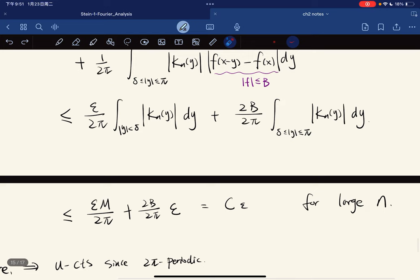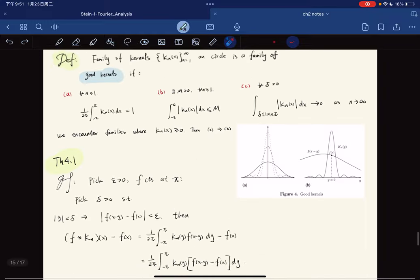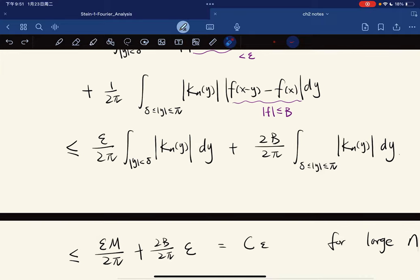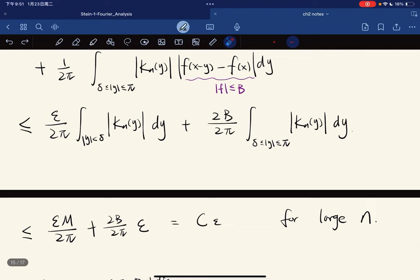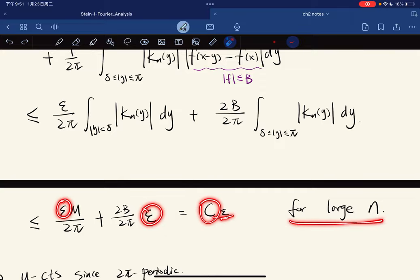Now because this is bounded and non-negative, we have our second property of good kernels—they are all bounded. So we have a bound M, and we know this can go to zero. We can make n large enough such that this thing is less than ε. So we get a constant times ε for large n.